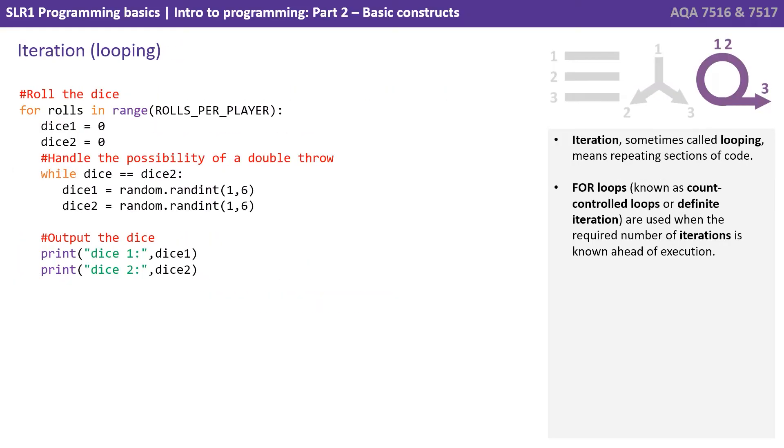Finally, we have iteration, or looping, which means repeating sections of code. For loops, also known as count-controlled loops or definite iteration, are used when the required number of iterations is known ahead of time.